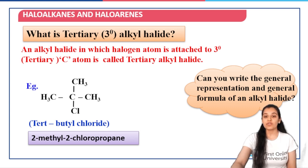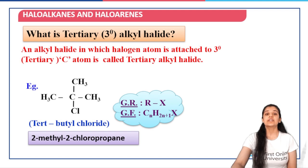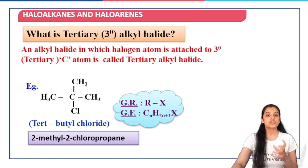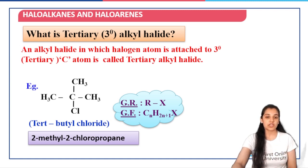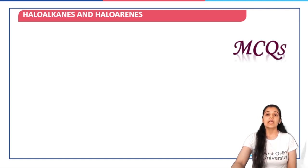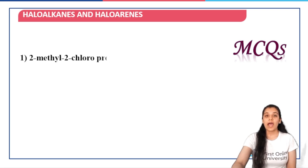The general representation of an alkyl halide is given by RX. The general formula would be CnH2n+1X. Based on this, let us have a look at a few MCQs.